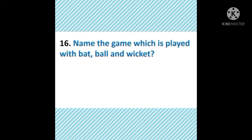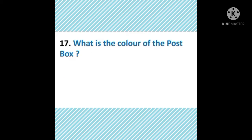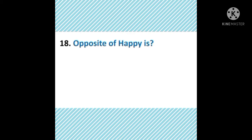Name the game which is played with bat, ball and wicket. Bat, ball और wicket के जरिये कौन सा game खेला जाता है? The answer is cricket. Cricket जो है वो bat, ball और wicket के जरिये खेला जाता है. What is the color of the post box? जिसमें हम letters डालते हैं — the answer is red. Post box red color का होता है।